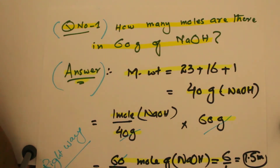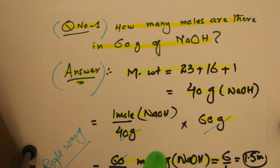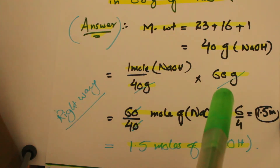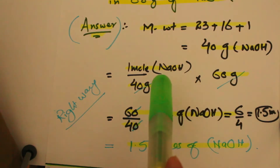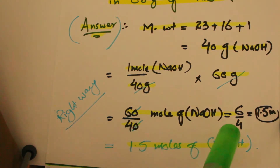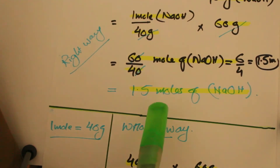Now I have to calculate the number of moles of sodium hydroxide in 60 grams. I set up a conversion factor to cancel the unnecessary units and remain only with the necessary unit. So 40 grams of sodium hydroxide is equal to 1 mole of sodium hydroxide. Grams is the unnecessary unit, so we cancel it, and we are left only with moles. When we divide 60 by 40 we get 1.5 moles of sodium hydroxide.